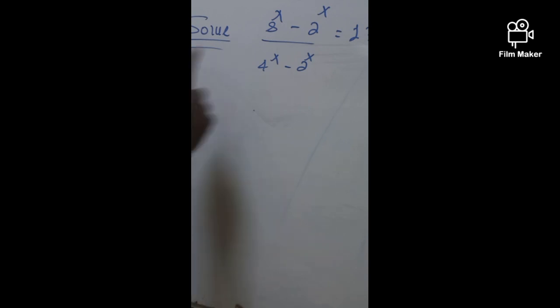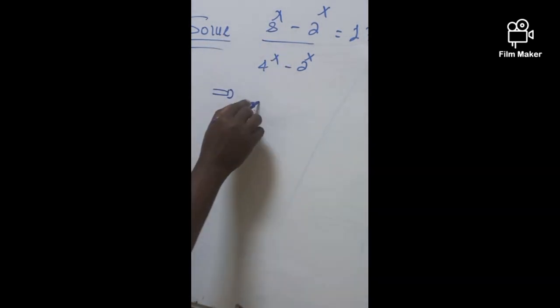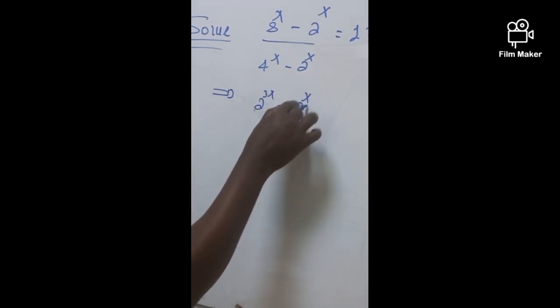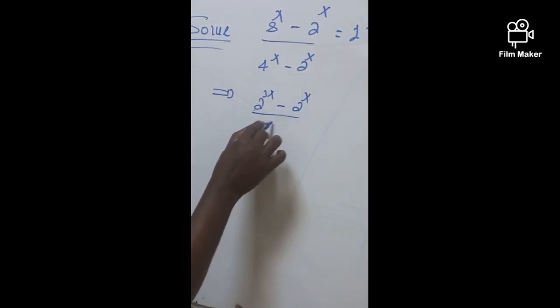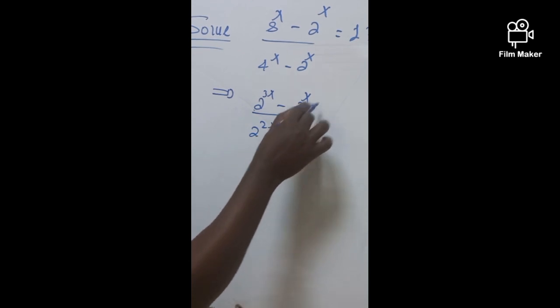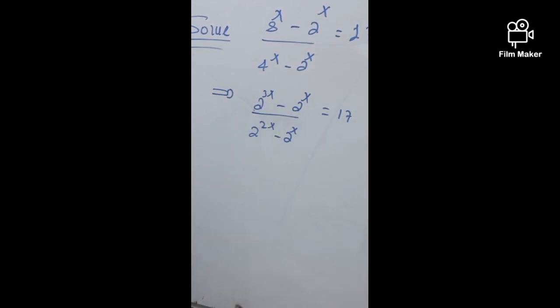Now, to solve this problem, at the very beginning we have to write this in the form of (2^(3x) - 2^x) / (2^(2x) - 2^x) = 17. Then you have to take out the common factor, that is 2^x.